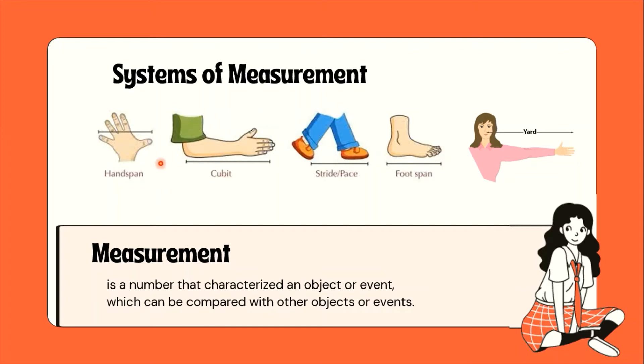Cubit naman ay mula sa ating elbow hanggang sa tip ng ating middle finger. Yung yun ang cubit. Stride or base naman ay yung isang hakbang.